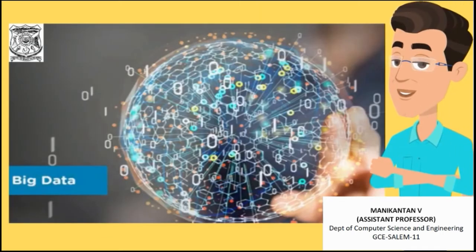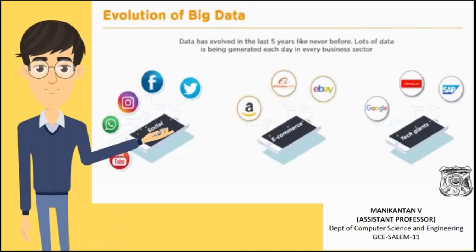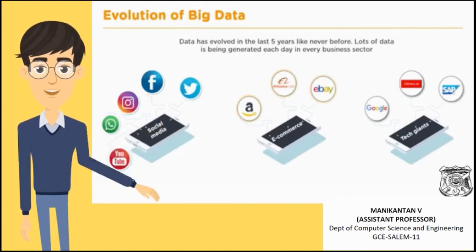Evolution of big data. Data has evolved like never before in the last five years. Lots of data is being generated each day in every business sector. Organizations have slowly started realizing that they would be interested in working on all this data. Data is being generated in every business sector — social media like Facebook, Instagram, WhatsApp, YouTube; e-commerce portals like eBay, Amazon, Flipkart, Alibaba; and tech giants such as Google, Oracle, SAP, Amazon, Microsoft, and so on.